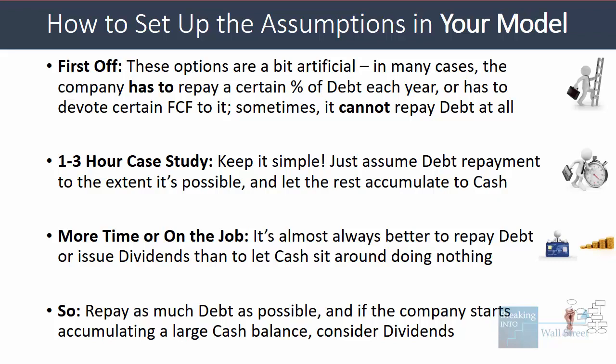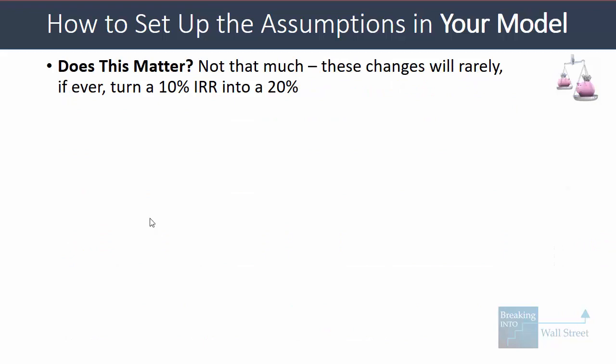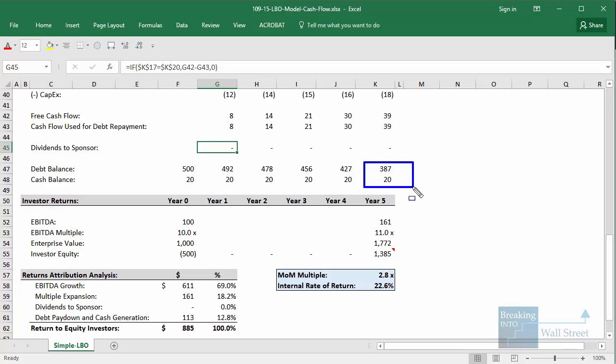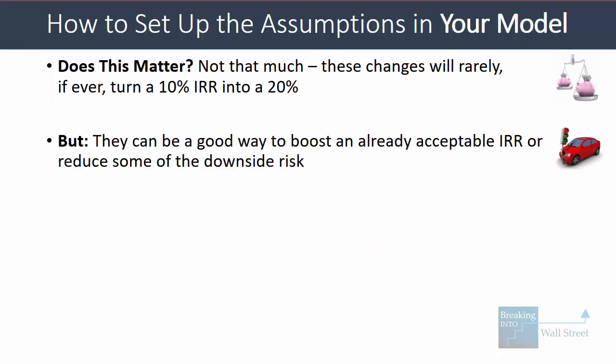If you go beyond a certain limit and the company can't repay more debt per the terms, then you might want to start thinking about issuing dividends. If the cash balance gets high enough early on — say in year two or three of a five-year holding period — it's almost always better to issue some dividends than to let it sit in the cash balance. That said, none of this matters dramatically; you're not going to go from a 10% IRR to a 20% IRR just because of how you treat free cash flow. It's not that different to let something accumulate to cash versus repay debt versus issue dividends, especially over a shorter holding period. But it can boost an already solid IRR — for example, taking a 21% IRR to 22% or 23% by issuing dividends.